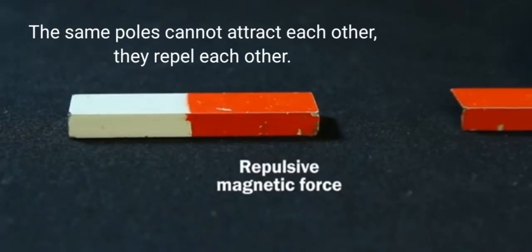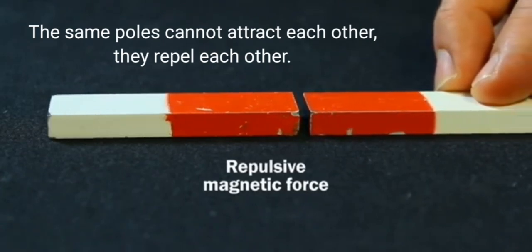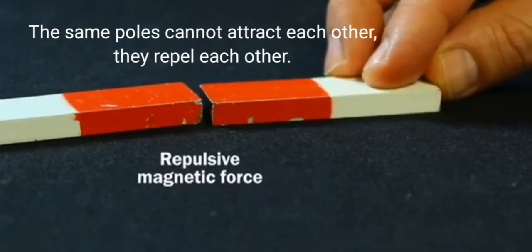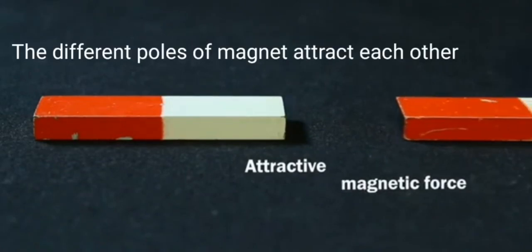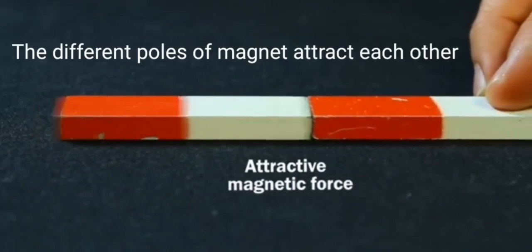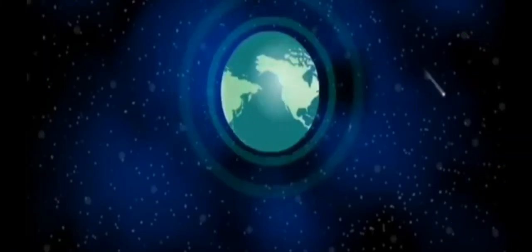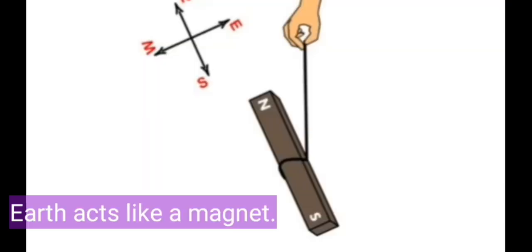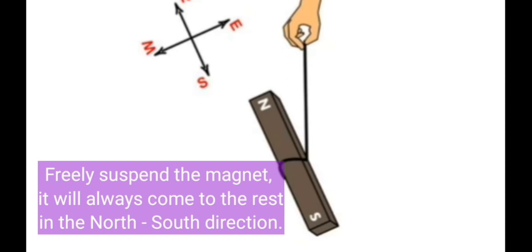In the next experiment, we can see that the same poles of the magnet cannot attract each other—they repel each other—while the different poles will attract each other. Earth acts like a magnet. We can make a very simple experiment to prove it: just suspend the magnet, and it will always come to rest in the north and south direction.